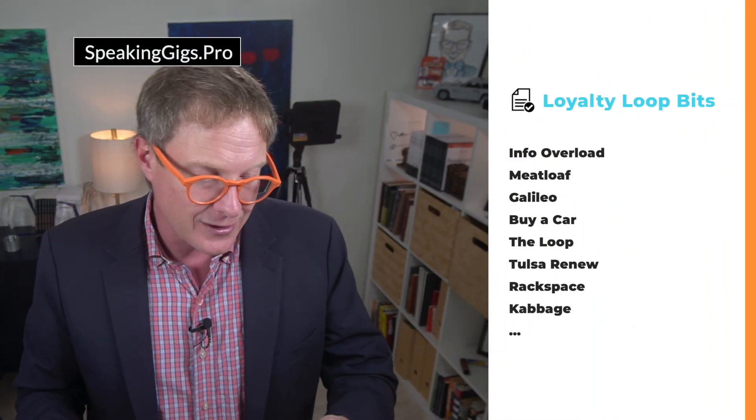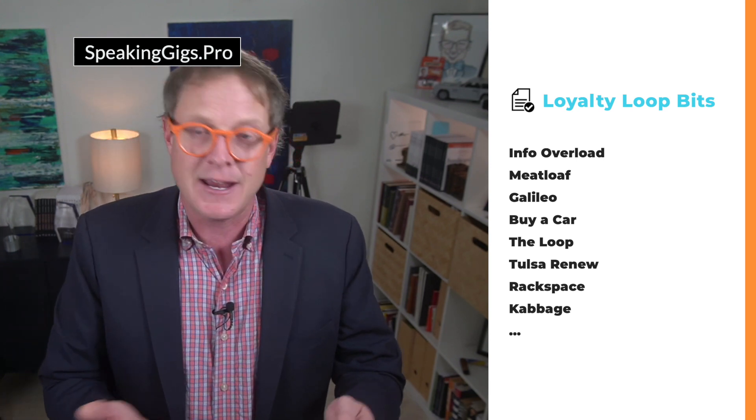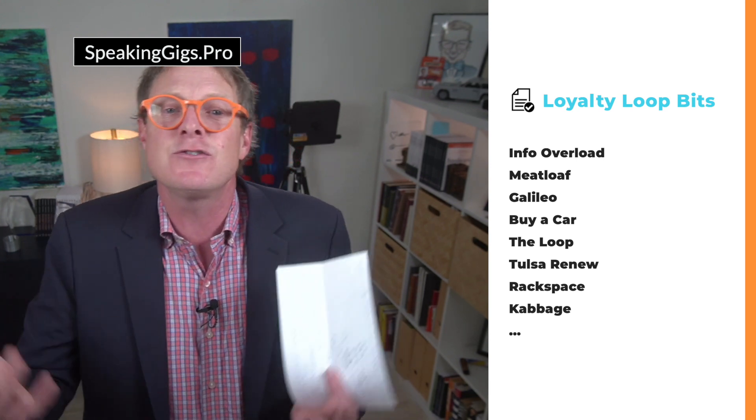For example, in my most referable speech — this is for the loyalty loop — I have bits with titles like info overload, meatloaf, Galileo, buy a car, the loop, Tulsa Renew, Rackspace, or cabbage. These are their names. They might not mean anything to you, but they do for me.